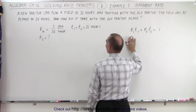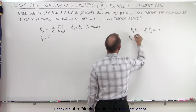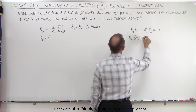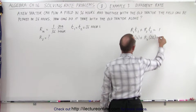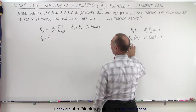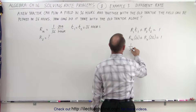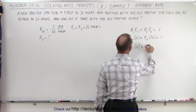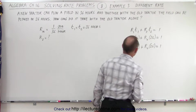The rate of the new tractor times the time together — which is 26 hours — plus the rate of the old tractor times the time together equals the whole job done. So we have: 1/36 times 26, plus the rate of the old tractor times 26, equals 1.